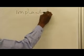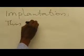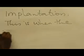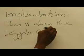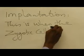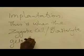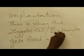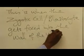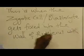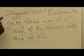Implantation. This is when the zygotic cells, or what we can also call blastosis, gets fixed into the wall of the uterus, with the aid of villi. This is what we refer to as implantation.